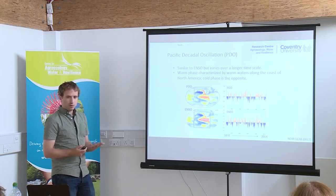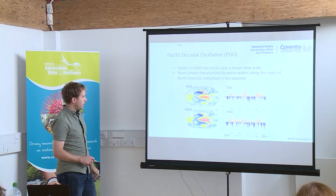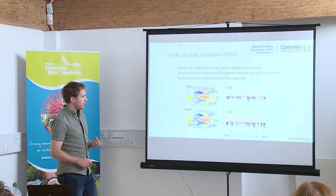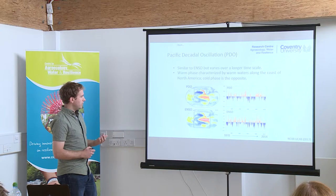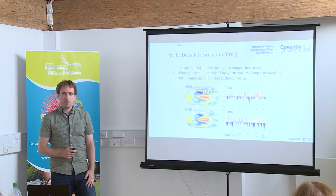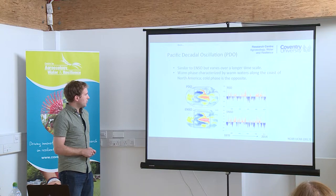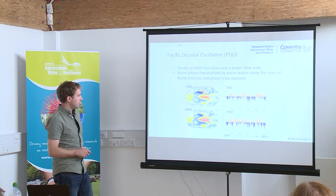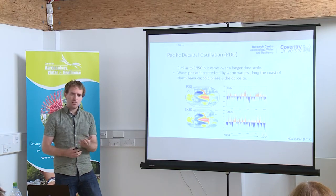The Pacific Decadal Oscillation is quite similar to ENSO in pattern, but varies over a much longer timescale. Whereas a full ENSO cycle can vary between three to eight years, a particular phase of the PDO may last for 20 to 30 years. The warm phase is characterised by warm waters along the coast of North America, and the cold phase is the opposite. Importantly, when PDO and ENSO are in phase together, that can exacerbate the teleconnections associated with each.